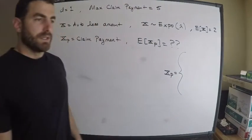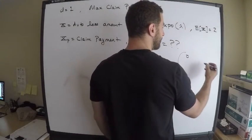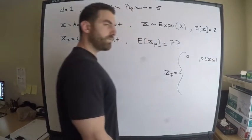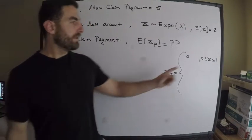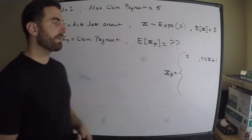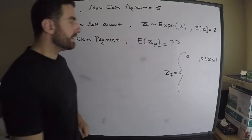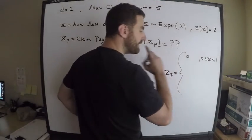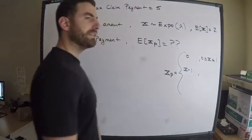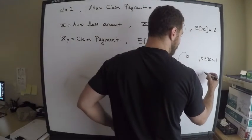Can the claim payment be zero? Absolutely — it's zero if the loss X is between zero and one. Why? Because if the loss is between zero and one, we haven't reached our deductible, so as the insurance company we pay nothing. Otherwise, we pay X minus one — that is, the loss minus the deductible — when the loss exceeds one.